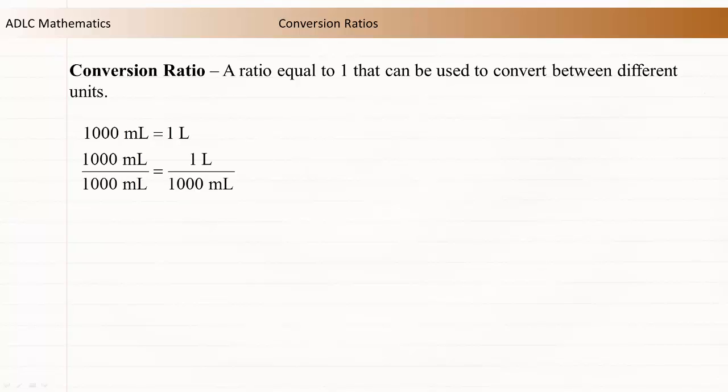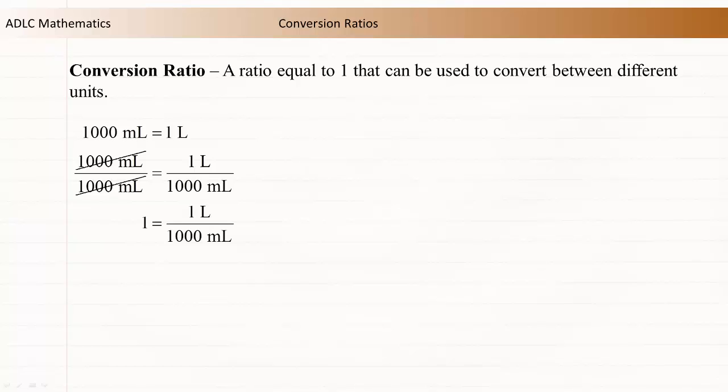If we divide both sides of this equation by 1000 milliliters, the two 1000 milliliters on the left side of the equation reduce, and the result is a ratio that is equal to 1, so it is a conversion ratio.